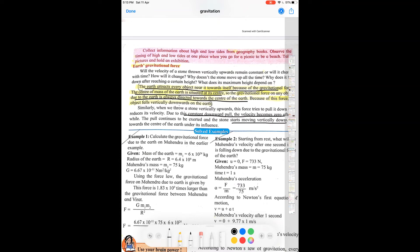Whenever an object is thrown vertically upwards, it reaches its maximum height and at that point, its velocity becomes zero. Why? Because the gravitational force is constantly pulling it down. Once it reaches its maximum height, it will start moving downwards vertically.